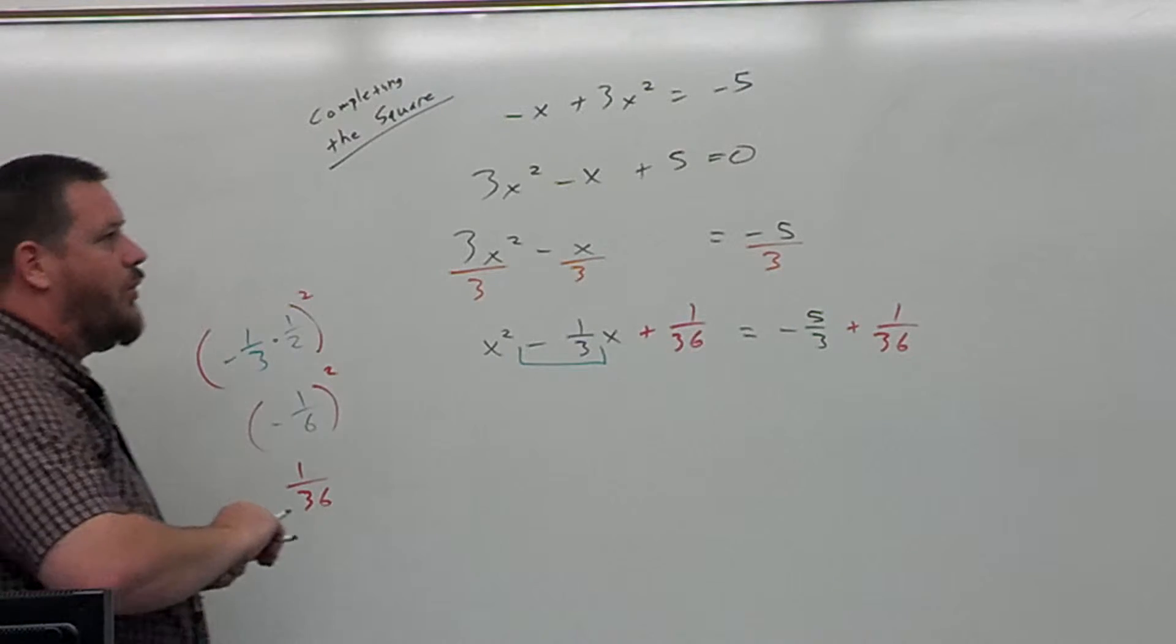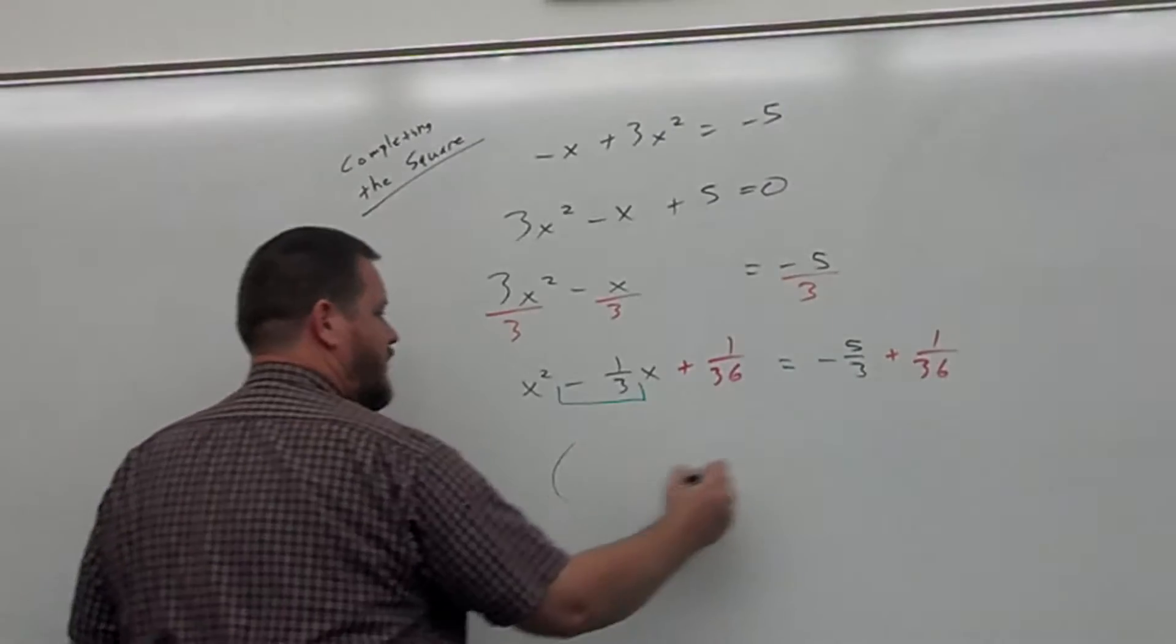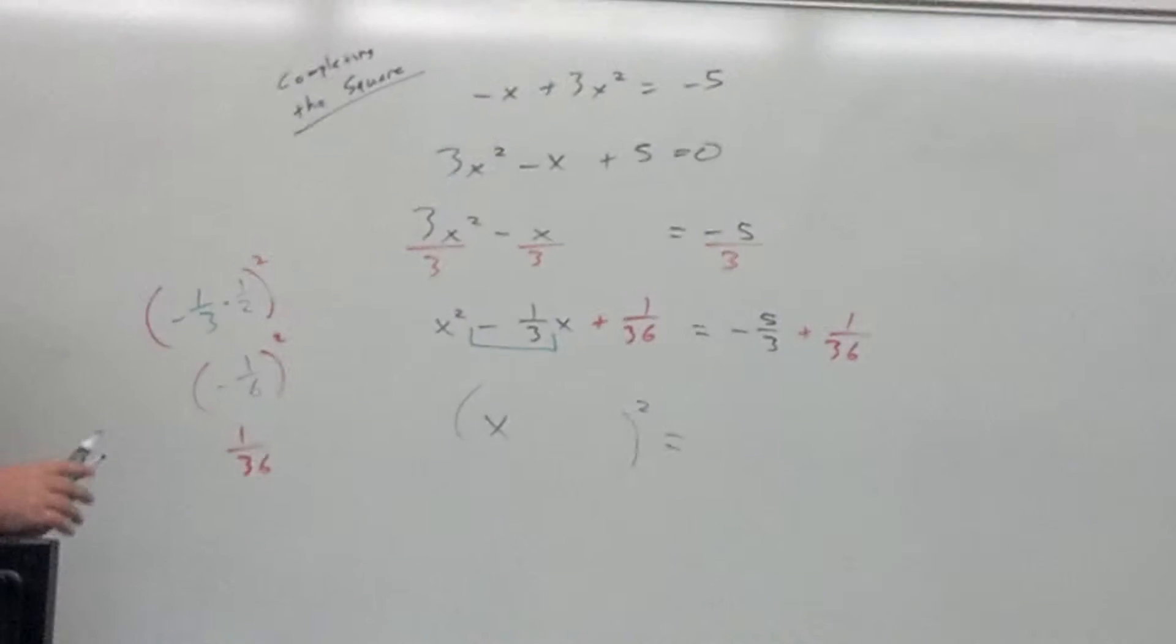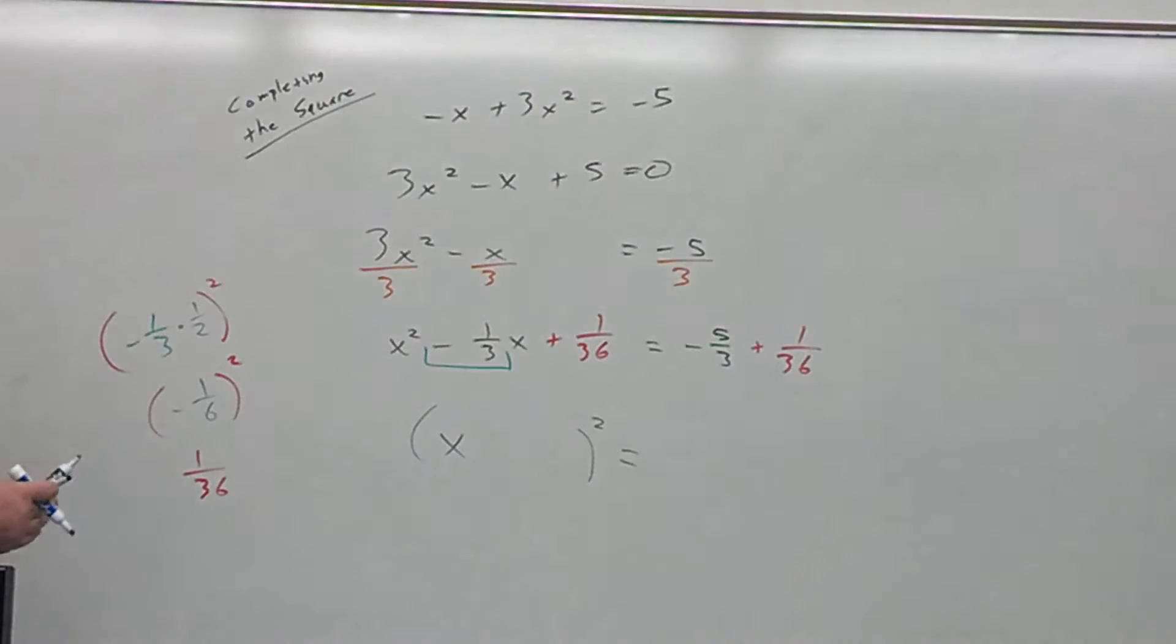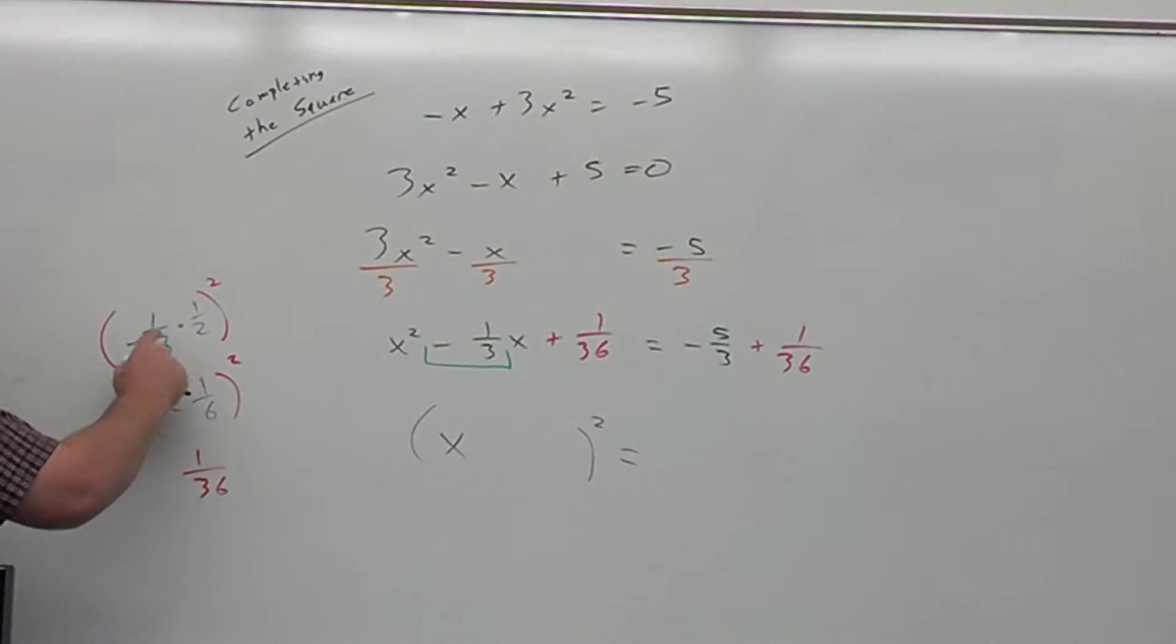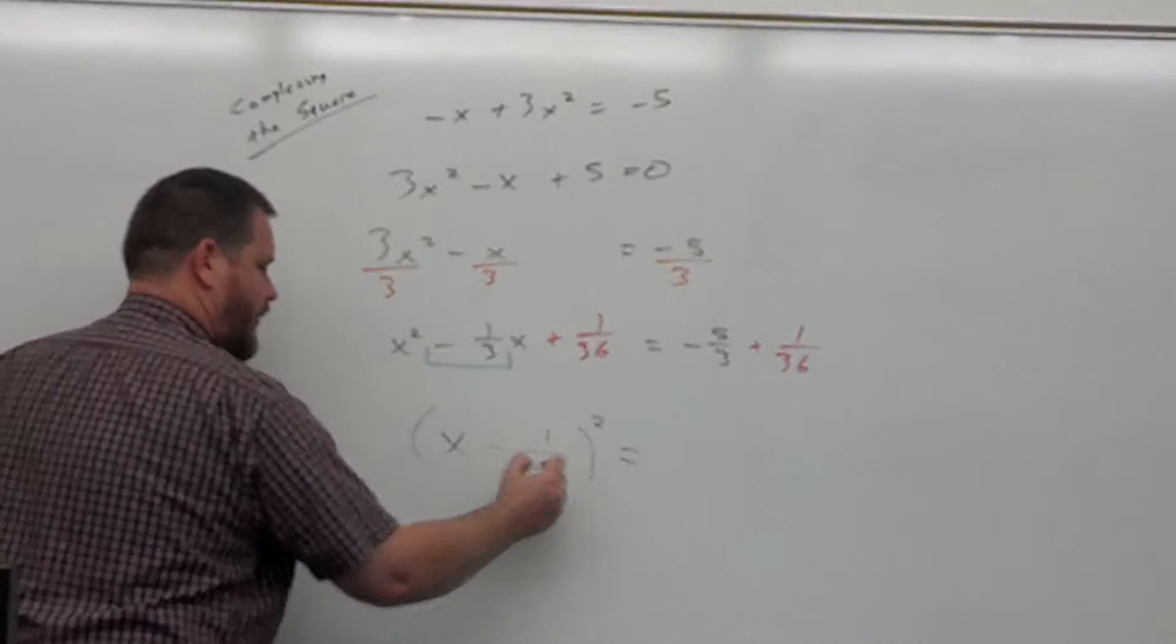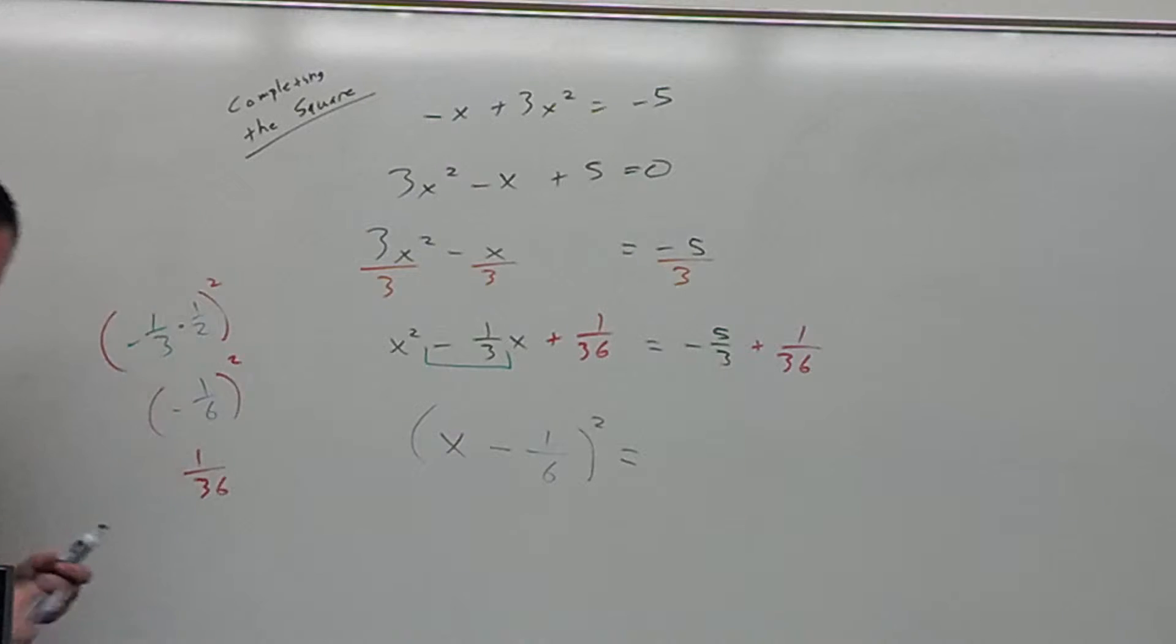Now the whole point of doing that is so that I can then rewrite the left side of the equation as x something squared. What is it that goes in there? It's this right here. It's the coefficient of the x term times 1 half. That is what goes here, including the sign. So negative 1 sixth is what goes right here. x minus 1 sixth is what goes inside the parentheses there.